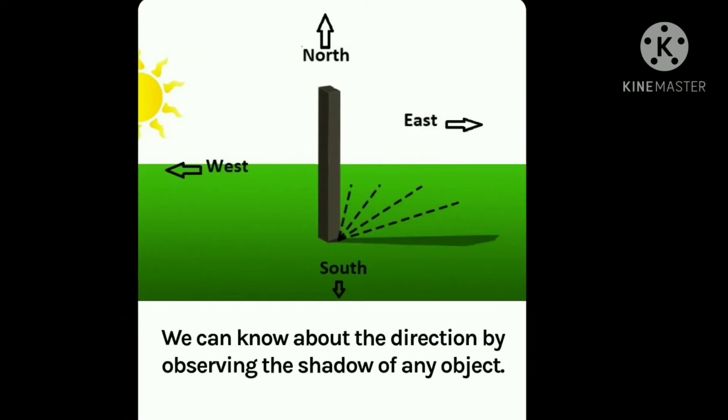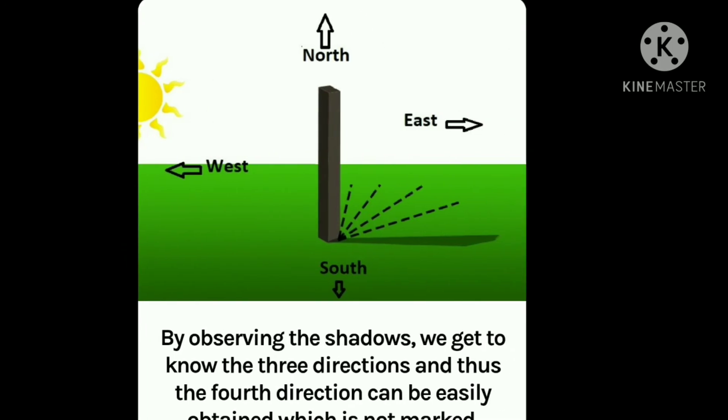Just take a revision. We can know about the directions by observing the shadow of any object. By observing the shadow, we get to know three directions and thus the fourth direction can be easily obtained.